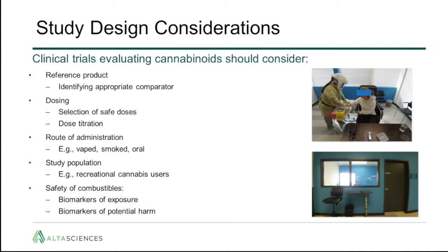There need to be very careful considerations around how products are administered in a clinical setting. The study population — for example, recreational cannabis users — are often selected because they have experience with the products, a degree of tolerability, and experience with various routes of administration that a healthy cannabis-naive user may not have. Various endpoints are examined, including biomarkers of exposure, biomarkers of potential harm, and what can be happening when the drug is ingested or inhaled.